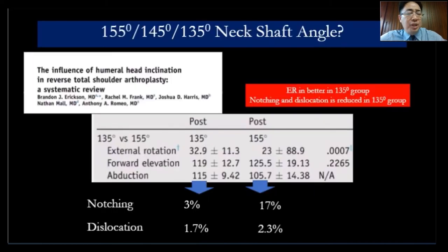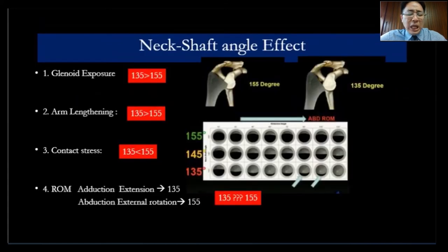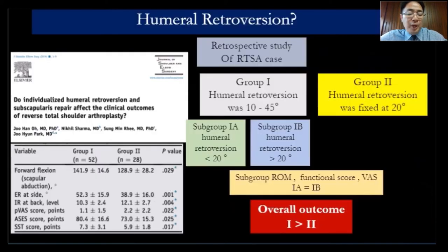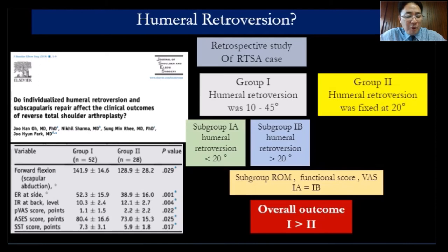For neck-shaft angle: 135 degrees gives less notching, better exposure, less contact pressure, and better adduction and extension compared to 155 degrees. For humeral retroversion, a study by Dr. Zhuhan Oh found that individualized retroversion gives better results than a fixed angle. So I follow his approach and prefer individualized native retroversion with an onlay 135-degree system.